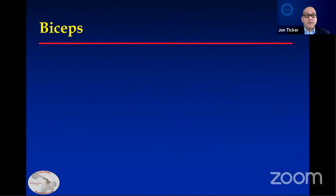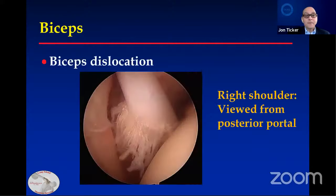Let's talk about the biceps — it's not the focus of this talk, but you can't talk about the subscapularis without referring to the biceps. This is what a dislocated biceps looks like in a right shoulder, projecting almost vertically from the superior glenohumeral origin. Here you can see the frayed, fibrillated portion of the biceps as it rubs in and out of the groove.